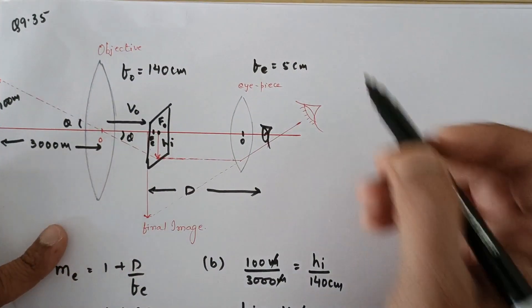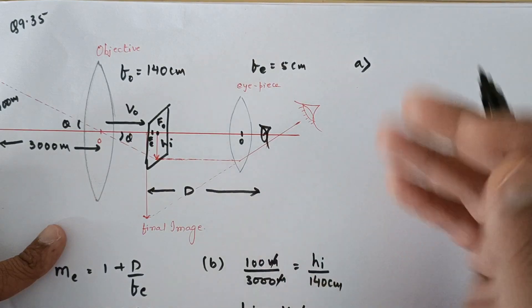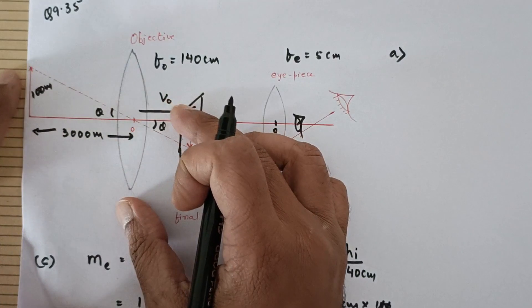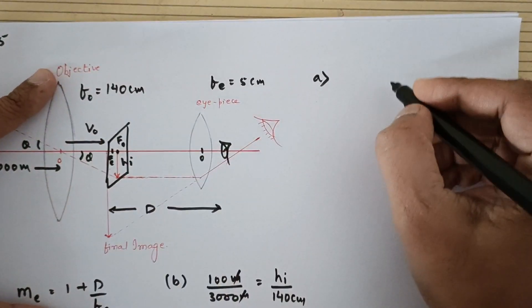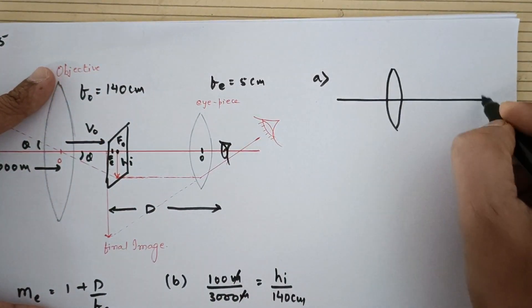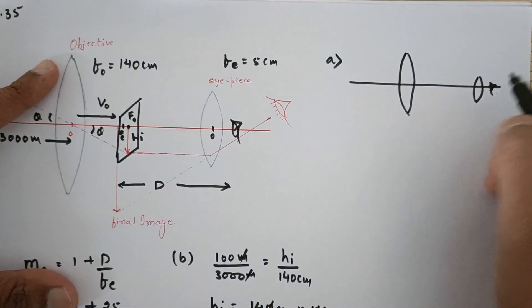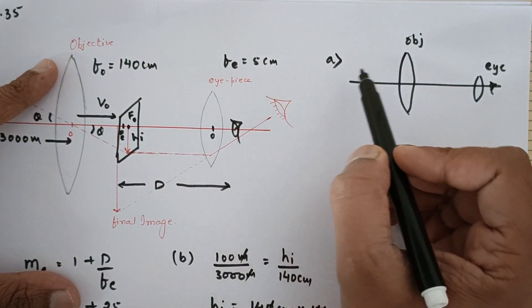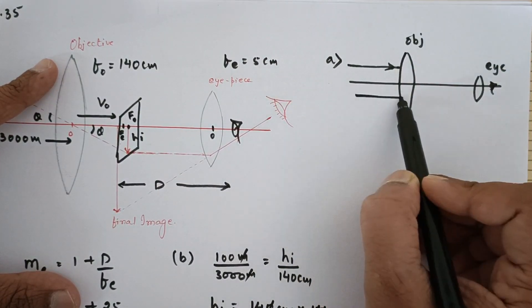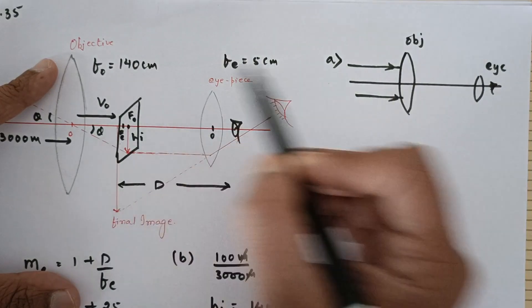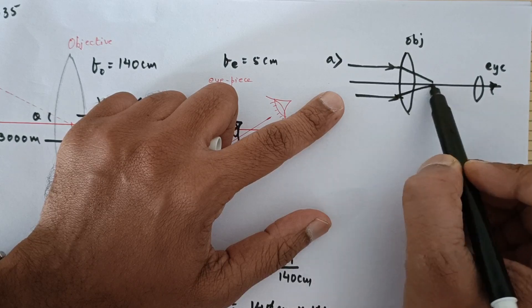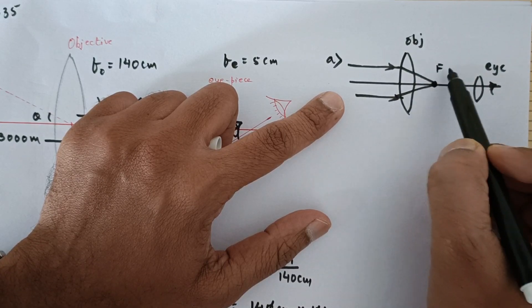Now talking about the A part, for that you will have to refer to the previous question. It says you are looking at an object at infinity, so this is the eyepiece and the eye is very near to the eyepiece, and this is the objective. The object is at infinity because you are looking at a very far away object practically at infinity, then the image is formed at focus. This is the focus of the objective.